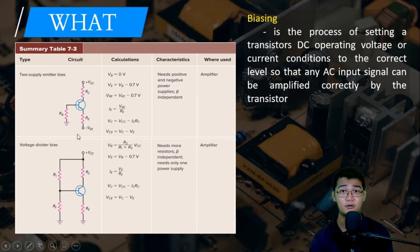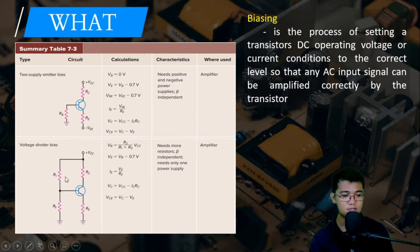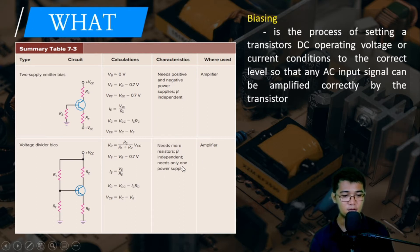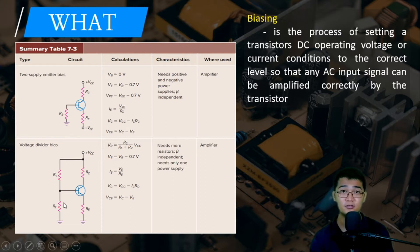The next configuration is the voltage divider bias. Here we have four resistors: R1, R2, RC, and RE. R1 and R2 are on the base side, and we have only one power supply — the collector supply also feeds the base. This configuration needs more resistors but is also beta-independent, and it is used as an amplifier.